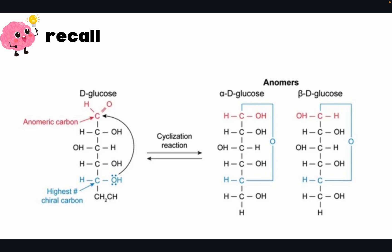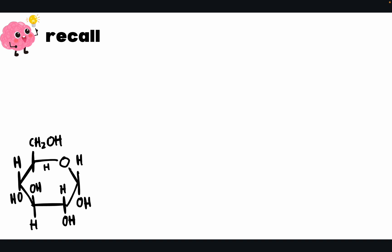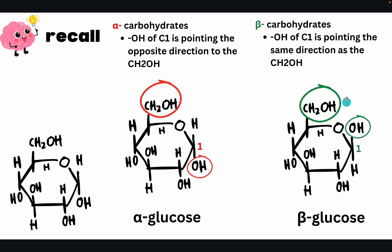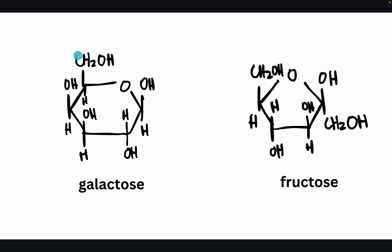In hemiacetals, if the hydroxyl group is on the right side, it is an alpha sugar; if the OH is on the left side, it is a beta anomer. In a Haworth projection, it is an alpha carbohydrate if the OH of C1 is pointing in the opposite direction of the CH2OH group. If they are on the same side, it is a beta carbohydrate. For example, in galactose and fructose shown here, both have CH2OH and OH pointing upward, so these are beta sugars.